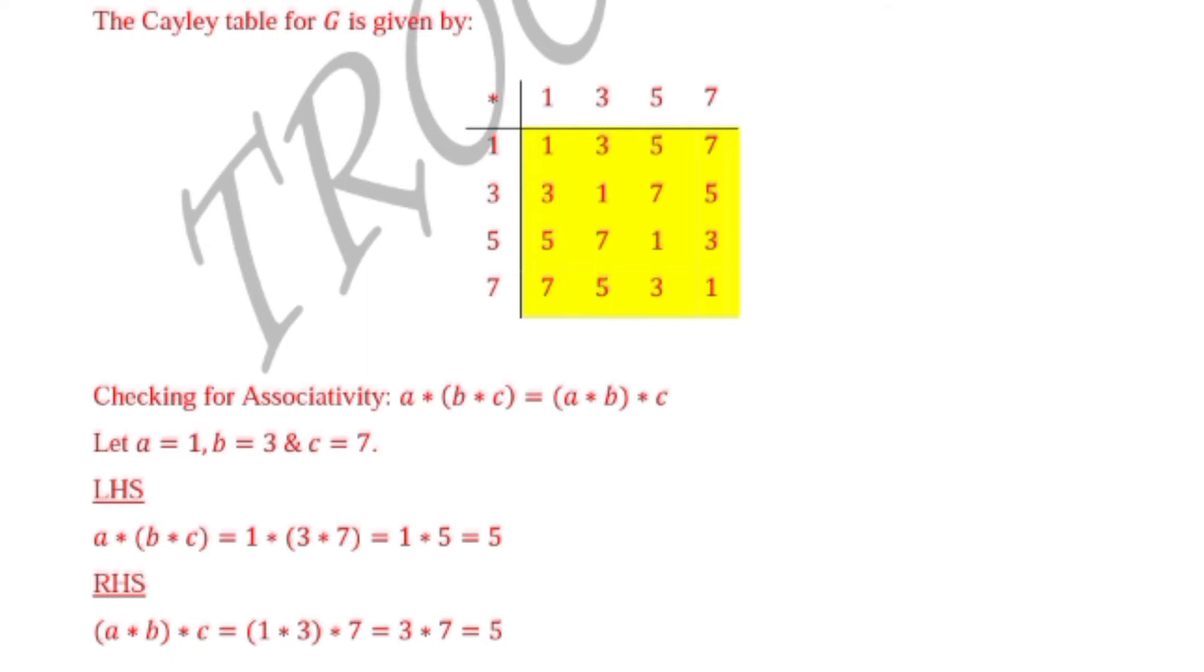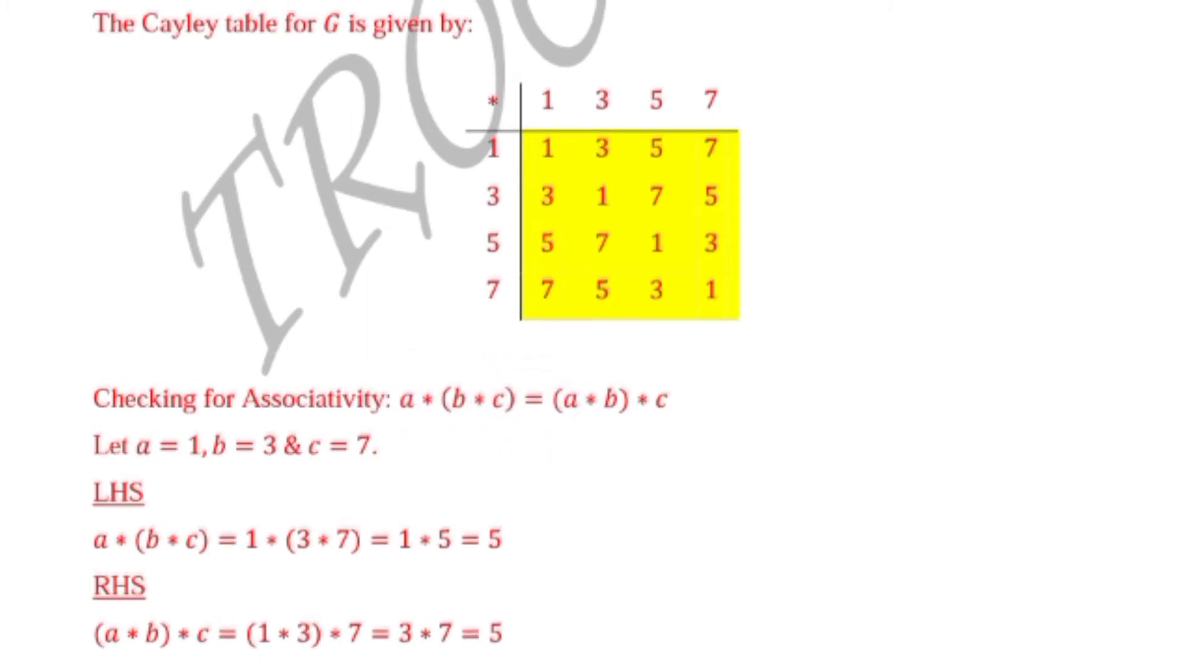For the left-hand side, A star (B star C) equals 1 star (3 star 7). We start with 3 star 7. From our Cayley table, 3 star 7 gives us 5. Therefore, we have 1 star 5, which from our Cayley table is 5. So A star (B star C) equals 1 star (3 star 7) equals 1 star 5 equals 5.